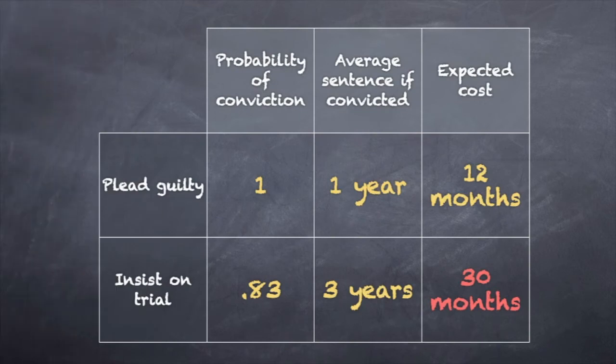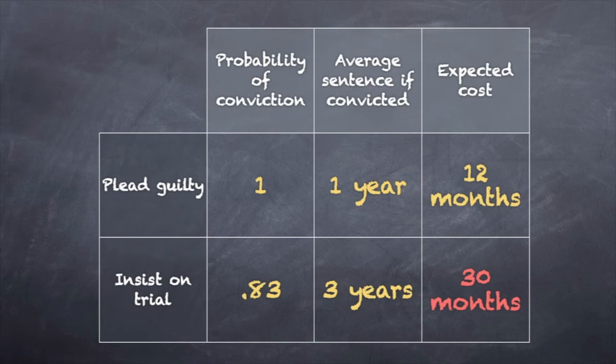Look at the left-hand column — probability of conviction. If you plead guilty, your chance of being convicted is one. If you go to trial, your chance of being convicted is 0.83, since on average only 17% of criminal trials result in acquittals. Go to the middle column: statistically, after correcting for different offenses, defendants who go to trial wind up getting sentenced three times as severely.